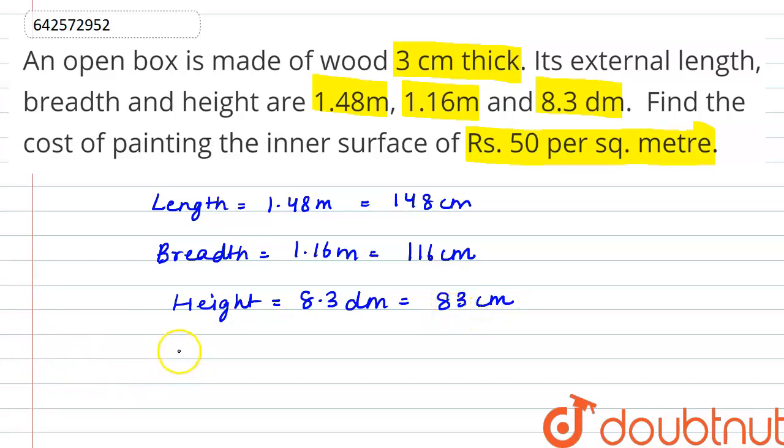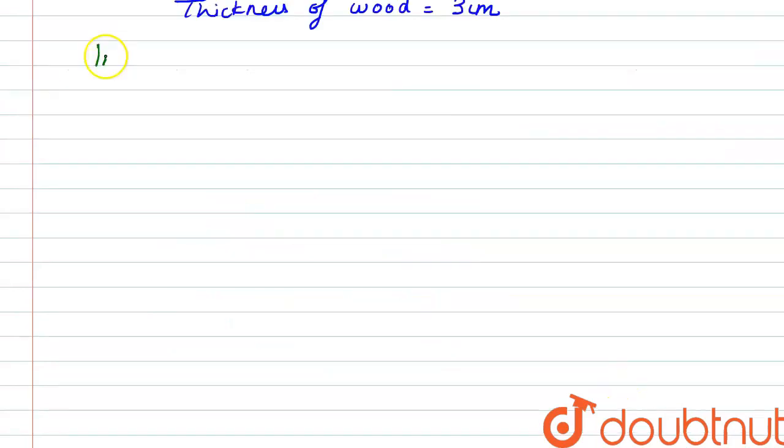And the thickness of wood is given as 3 centimeter. Okay, inner dimensions will be, the length will be 148 minus 2 into 3. So it will be 148 minus 6 is 142 centimeter.